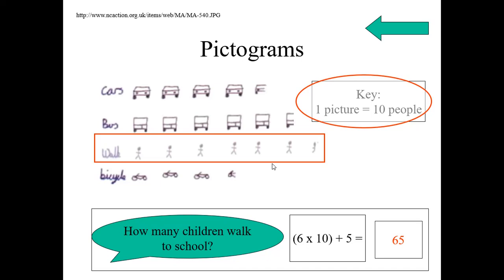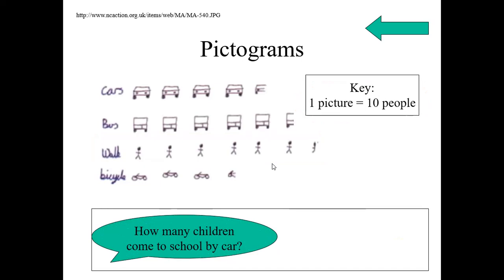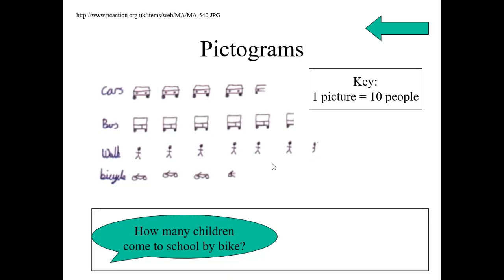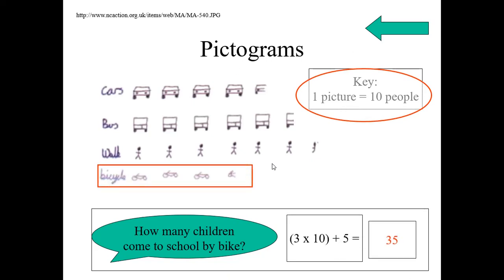In this way, shall we answer another question? How many children come to school by car? Count the number of cars. Multiply into 10 and plus half of 10. Total 4 into 10 plus 5. Answer is 45. Now, tell me another answer. How many children come to school by bike? Count the full bikes and count half bike. Full bikes into 10 plus half. Now, write the answer. See the answer. That is 35.